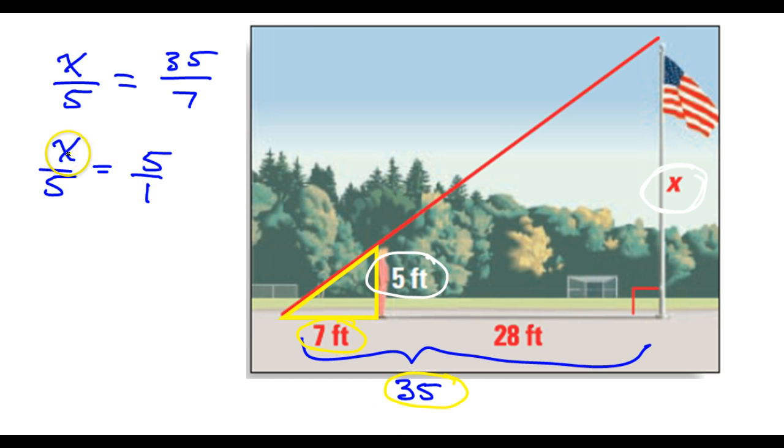So then cross-multiplying, it's a little silly, but X times 1 will give you X. 5 times 5 gives you 25. So the flagpole is 25, and let's not forget our units, 25 feet tall.